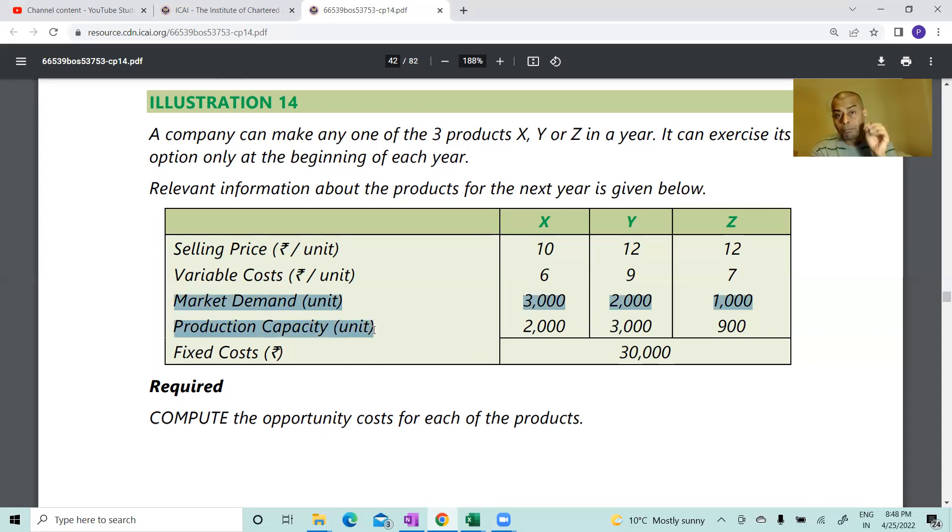What is the possible sale or possible profit or contribution? It is lower of market demand and production capacity. Fixed cost 30,000 is irrelevant whether you manufacture X or Y or Z. Fixed cost is irrelevant.